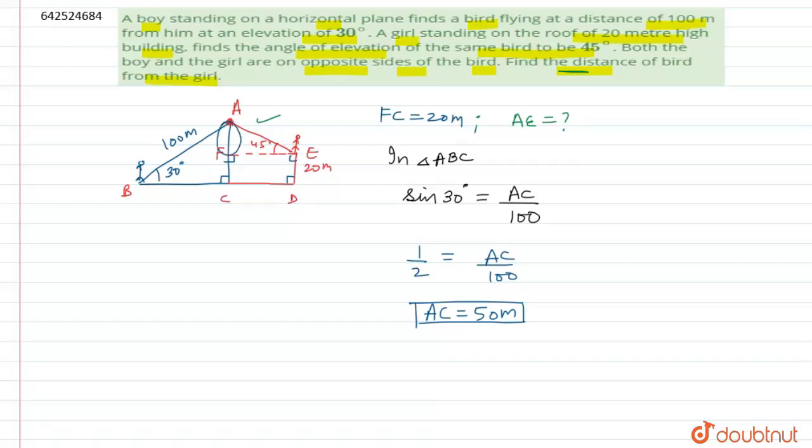Now we can easily find the value of AF. So AF can be written as AC minus FC, and FC we have already found the value, that is equal to 20 meters. So AC is 50 minus 20, so AF value will be equal to 30 meters.